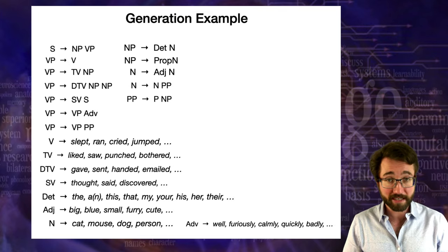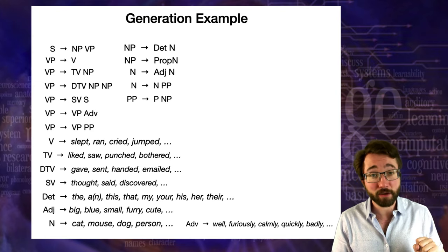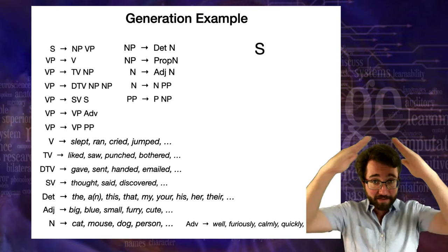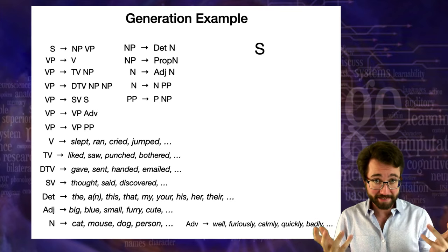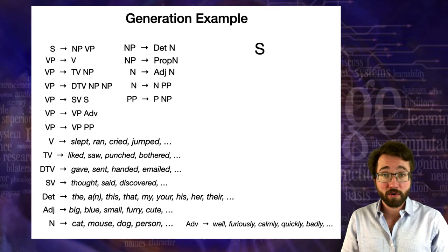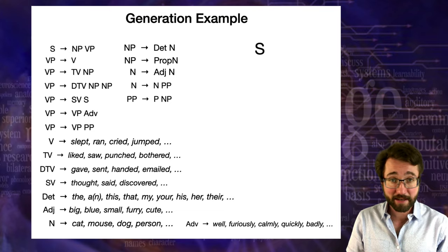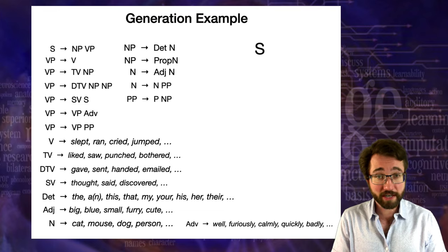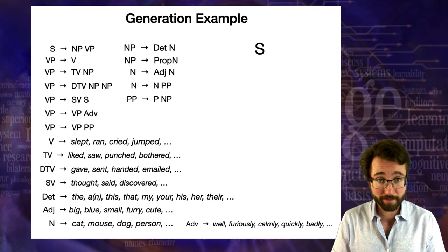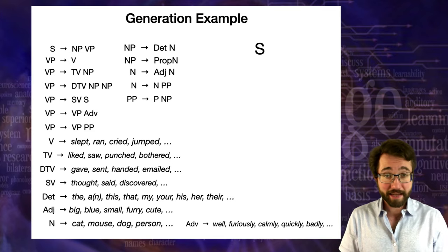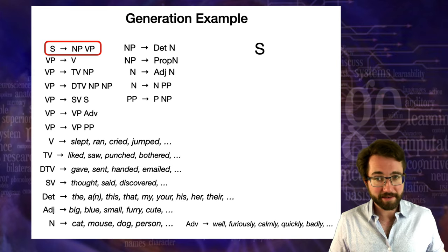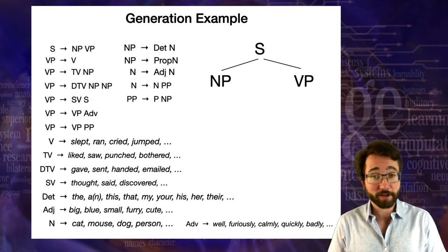We're going to do a generation example first. Generation means we're turning the crank forward, following the arrows in the rules. You always start with the symbol S for sentence — a syntactic tree should always have S on top. We just have an S so far. There's only one rule for S: an S can consist of an NP followed by a VP. So we expand it into an NP followed by a VP.